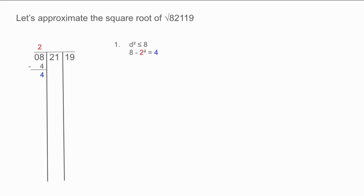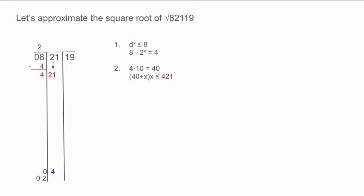Place the 2 which we obtained earlier at the bottom of the column. Double the 2 and move it one space to the right. Now we will obtain the second part of the integer. First, move the 21 down so it is beside the 4. Then, multiply the 4 at the very bottom of the column by 10. Find the largest x where 40 plus x times x is less than or equal to 421.